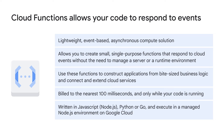Individual Cloud Functions are written in JavaScript, Node.js, Python, or Go, and executed in a managed Node.js environment on Google Cloud. Events from Cloud Storage and Pub/Sub can trigger Cloud Functions asynchronously, or you can use HTTP invocation for synchronous execution.